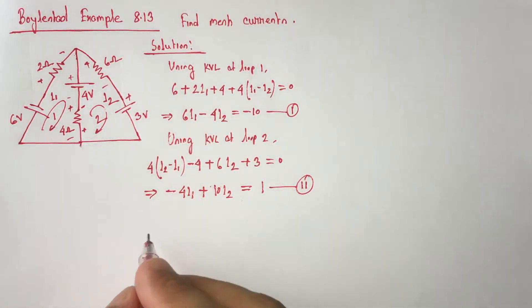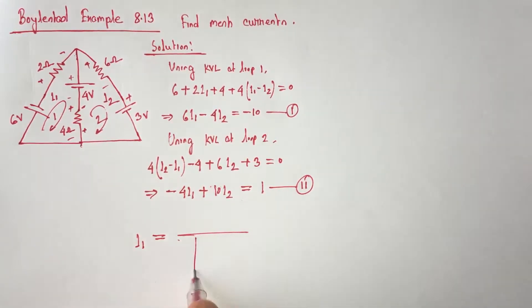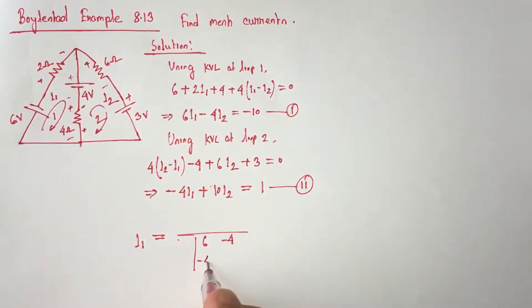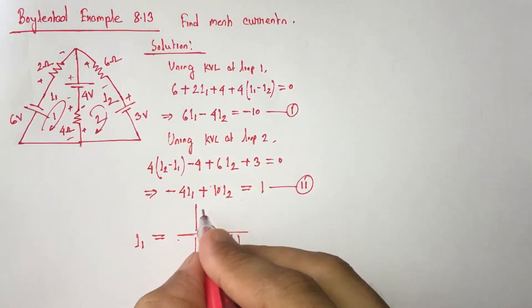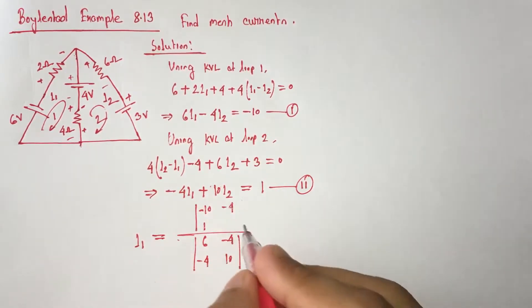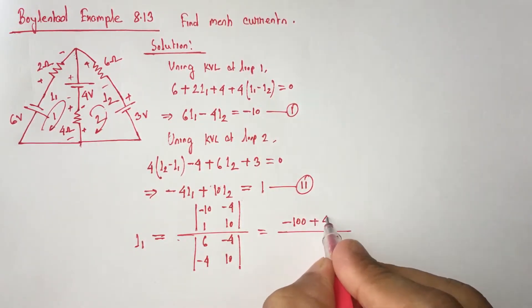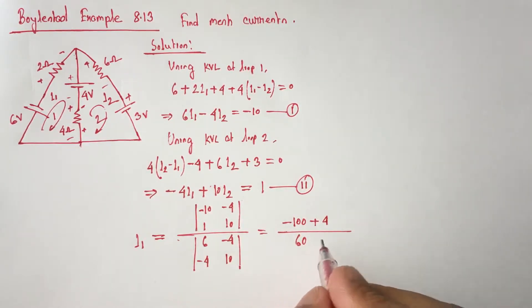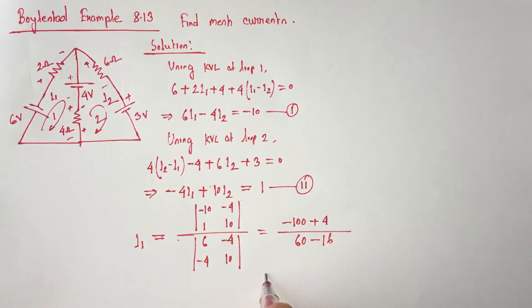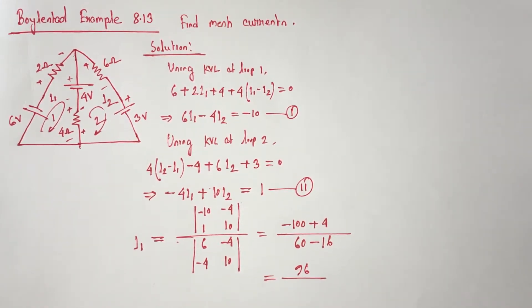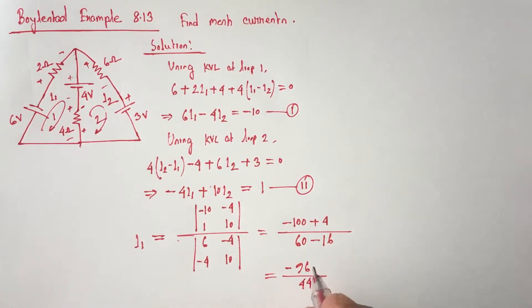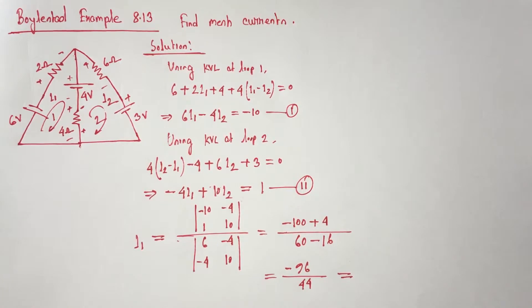Solving equations 1 and 2 simultaneously, using the determinant method with coefficients 1, minus 4, minus 4, and 10, the denominator is 10 minus 16 equals minus 6, giving a result. I2 is equal to minus 2.1818.